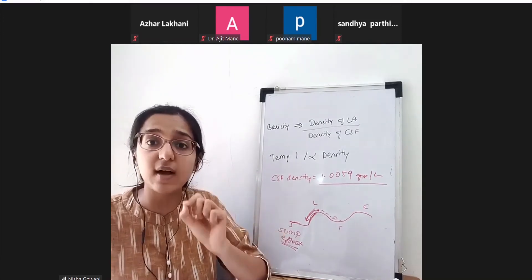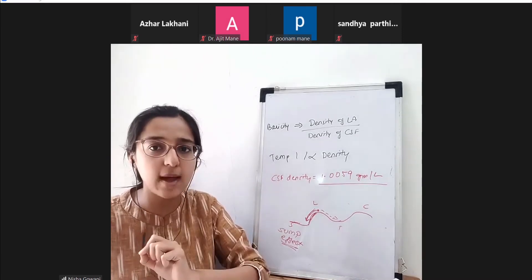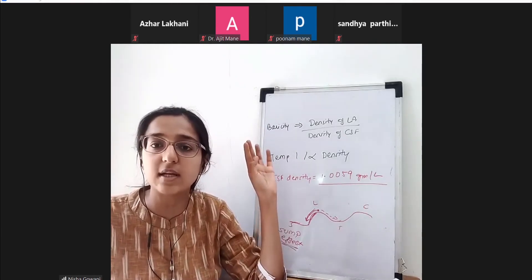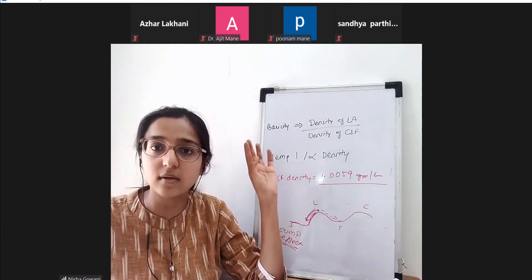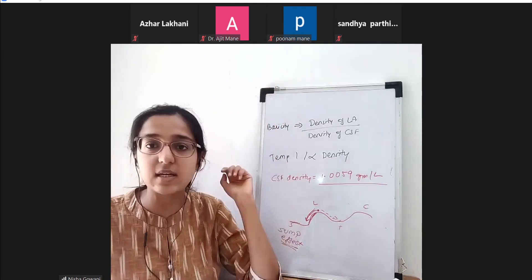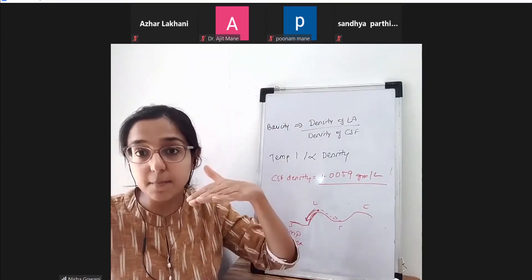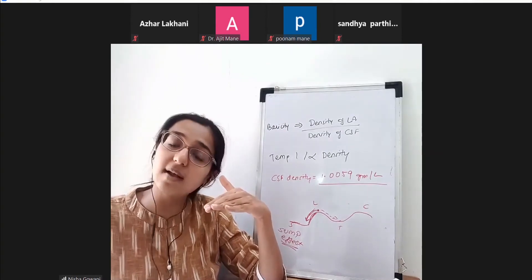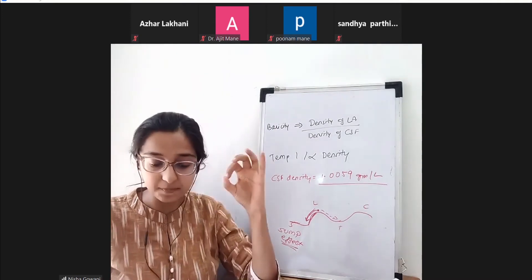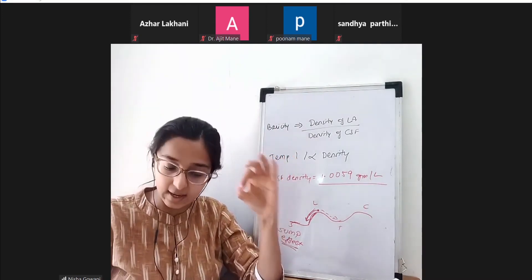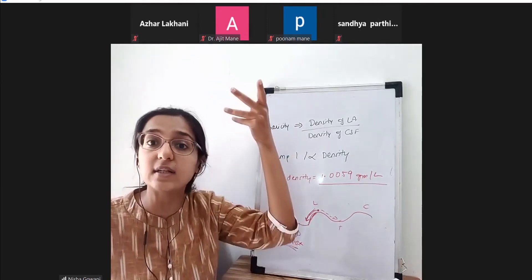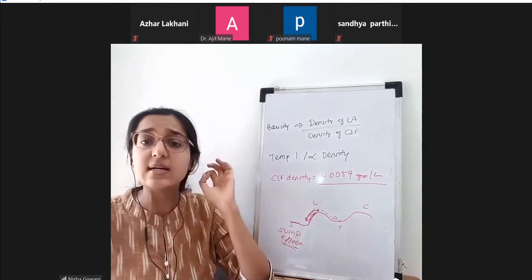For hypobaric drug: it is lighter than CSF. If you give a hypobaric drug in the sitting position, the drug will go straight up — you could cause an inadvertent high spinal. So you cannot give it sitting. Hypobaric drug is given in the prone position with an 8-degree head low, to prevent inadvertent high spinal anesthesia.